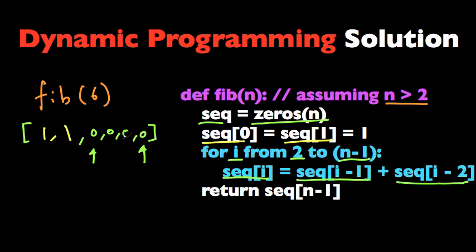So for the third element we get 1 plus 1 equals 2, and for the fourth element we get 1 plus 2 equals 3, and 5 and so on. And at the end we're just going to return the last element in the array, which is 8 in this case.